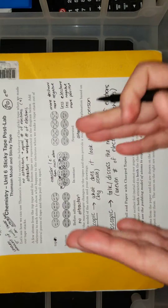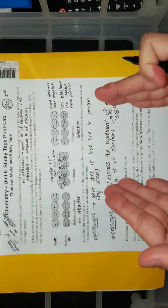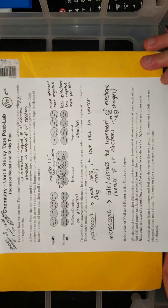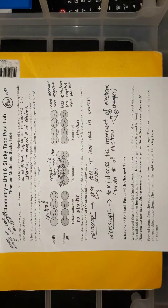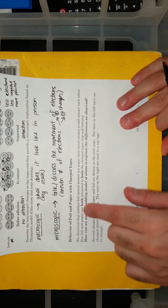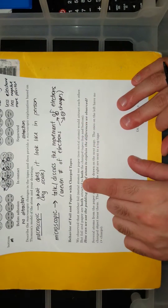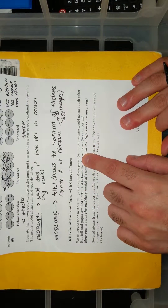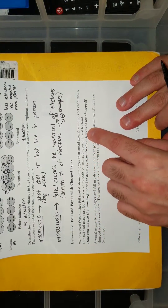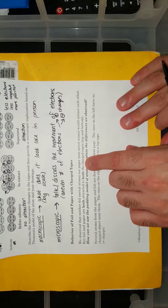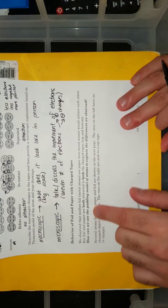We mentioned in class that the whole purpose of ripping the tape is to charge the tape. If I didn't rip the tape apart, I would get no charges — they'd be neutral, and there would be no attraction. On the bottom of the sheet it says: we observed that neither foil nor paper would attract each other, but foil and paper are both attracted to the charged tapes. A lot of us recorded that — some had little attraction for paper, but we know we got attraction to the foil.